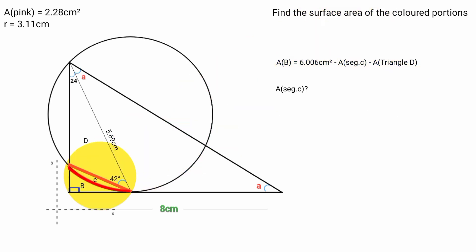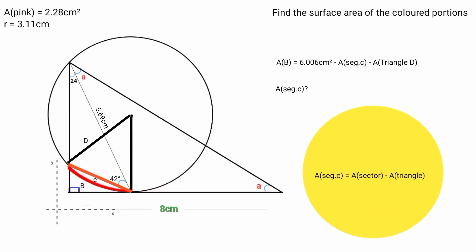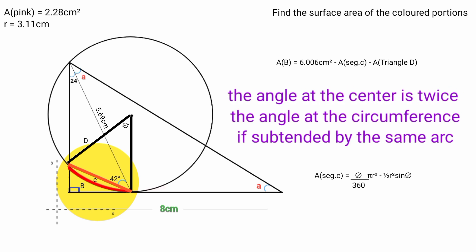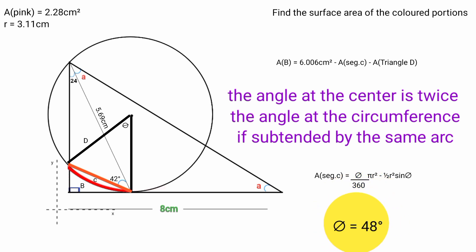Now what is the area of segment C? Area of segment equals area of sector minus area of triangle, where area of sector equals theta over 360 times pi R squared and area of triangle equals 1 over 2 R squared sin theta. Theta is the angle at the center. This angle theta and this angle here are subtended by the same arc. Since the angle at the center is twice the angle at the circumference, and this is 24 degrees, theta equals 2 times 24 which is 48 degrees.